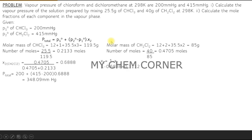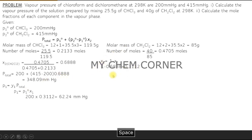For the second question — mole fraction of components in the vapor phase — we need y1. Using p1 = y1 × p-total, we first calculate p1 using p1 = p1° × x1, where p1° = 200 mmHg and x1 = 1 − x2. Substituting these values gives p1, and then y1 = p1 ÷ p-total.